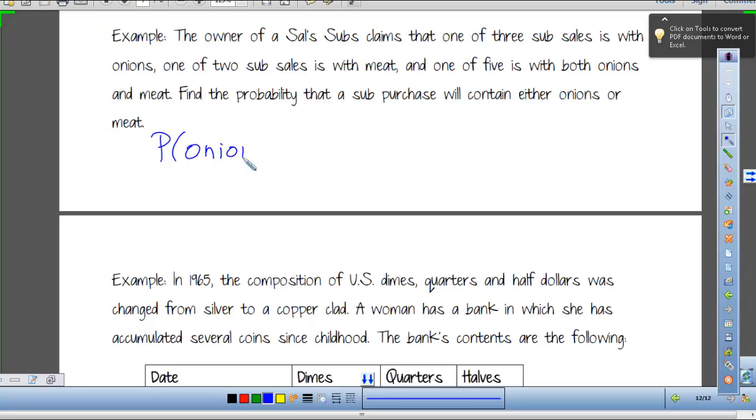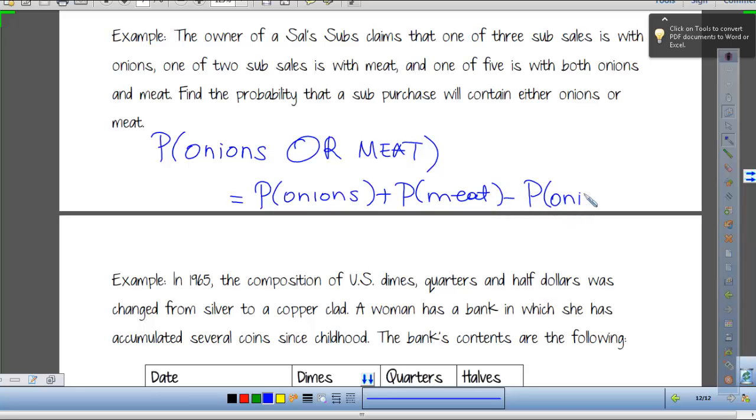We heard keyword or. Every time, no matter how complex the problem, these rules work if you think about these keywords that I'm gonna introduce. And so we stop and we ask ourselves, we know what or means, addition rule. We ask ourselves, are these events mutually exclusive? No, because we can see that some people got onions and meat. So we're gonna say probability of onions plus the probability of meat minus the probability of onions and meat.